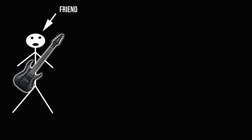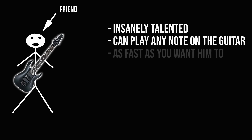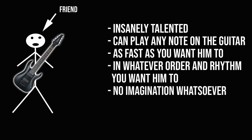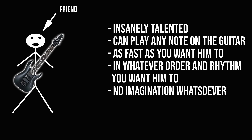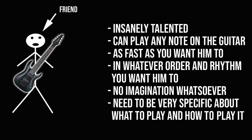Well, imagine that you have a friend that you give a guitar. He's insanely talented — he can play any note on the guitar as fast as you want him to, in whatever order and rhythm you want him to. He also has no imagination whatsoever though, so if you want him to play some guitar for you, you are going to have to be very specific about what you want him to play. So basically we need to give him a ruleset on how to play whatever we want him to play. The friend in this example is the computer, and the ruleset is the code we need to write.